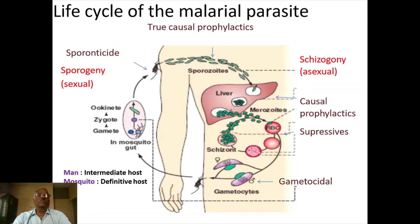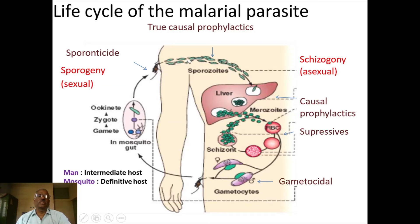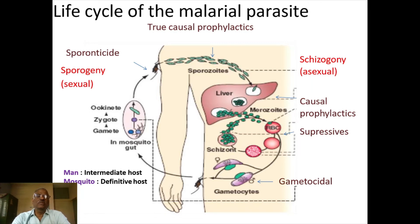Now we will discuss about the life cycle of the malaria parasite. Malaria is caused by female Anopheles mosquitoes. On the biting of the infected female Anopheles mosquito, it releases a number of sporozoites. There are a number of sporozoites in the salivary gland of the female Anopheles mosquitoes. These sporozoites immediately disappear from the circulation and invade the reticuloendothelial system and also the liver.